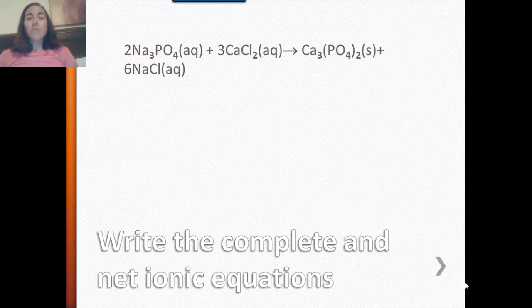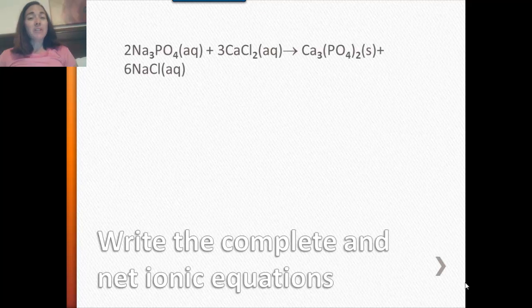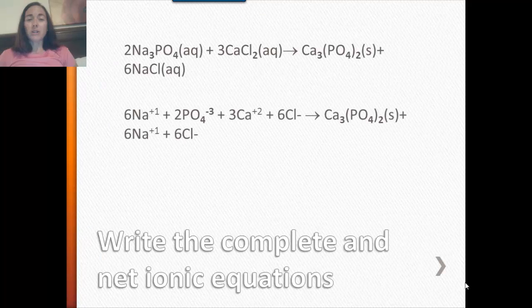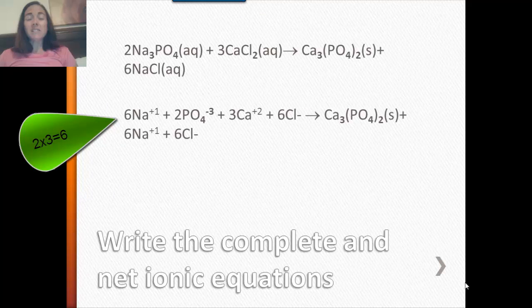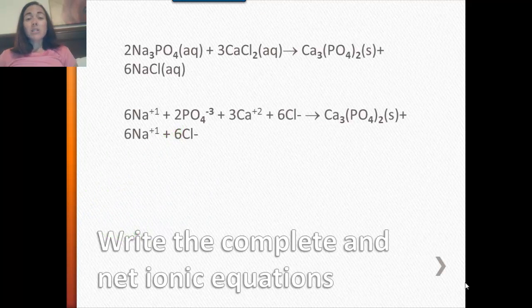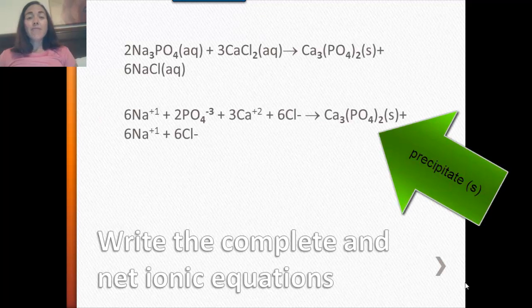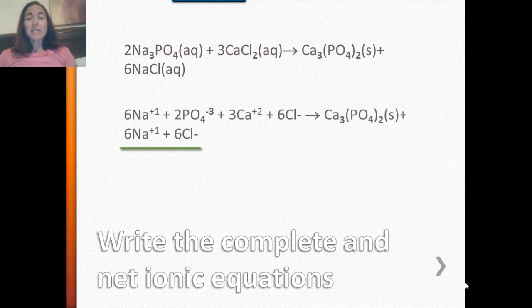Here's another example — a balanced double replacement reaction. I've already used the solubility rules to figure out which parts are aqueous and which are the precipitate. We take each aqueous compound and split it into its ions — watch the coefficients, because you have to include those. The 2 coefficient in front of sodium phosphate gives 6 sodium ions and 2 phosphate ions. Calcium chloride has a coefficient of 3, giving 3 calcium ions and 6 chloride ions (3 × 2). Calcium phosphate is the precipitate, so rewrite it as is. Sodium chloride is aqueous with a coefficient of 6, giving 6 sodium ions and 6 chloride ions. That's the complete ionic equation.